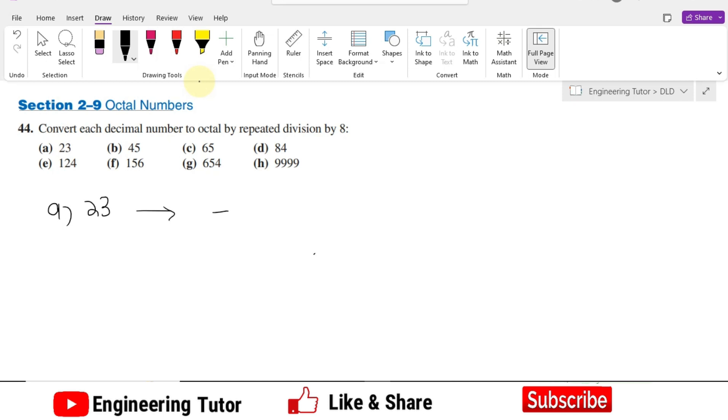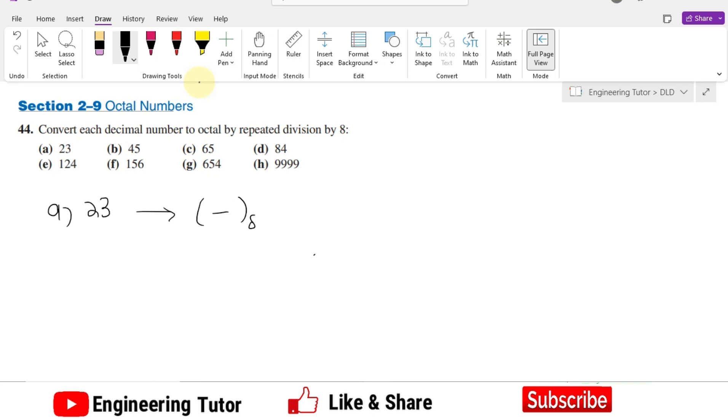What I have to do is find the number in octal. Which procedure do I have to use here? I will use repetitive division. The number I have is 23 and I have to divide it by 8.